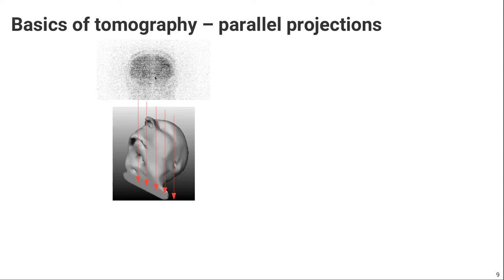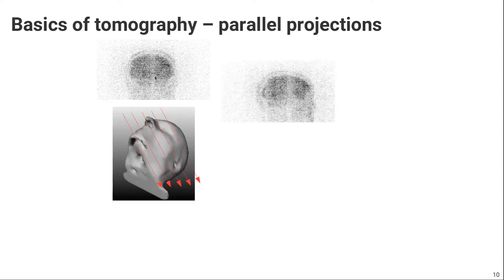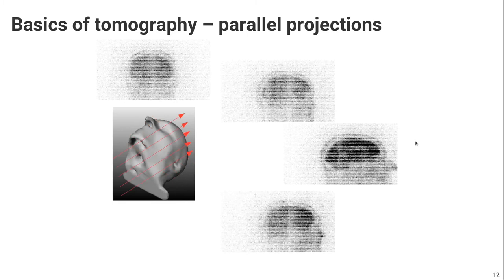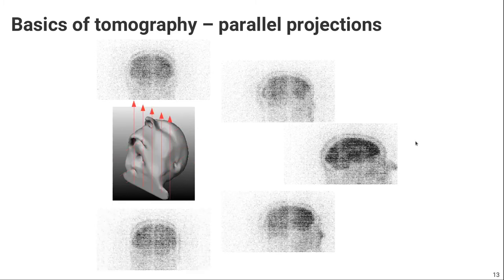And of course we can do that in different directions. So here for example the 45 degree projection, then a 90 degree projection, looking through the brain from left to right. You can do it for 135 degrees and of course also 180 degrees. So in the end we obtain a series of 2D projection images from a 3D distribution.